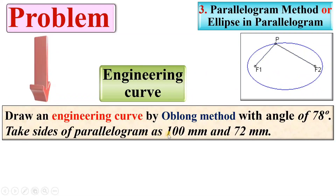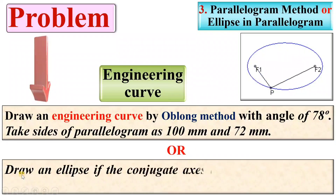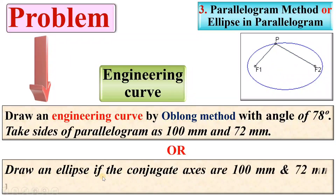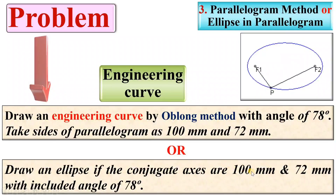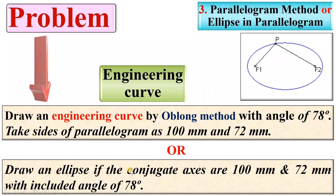Take sides of the parallelogram as 100 mm and 72 mm. It can be asked in a different way also: draw an ellipse if the conjugate axes are 100 mm and 72 mm with an included angle of 78 degrees. So the same problem can be asked in a different way.